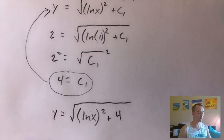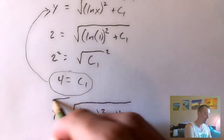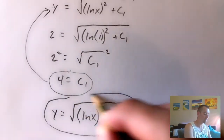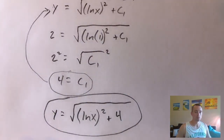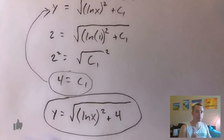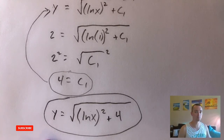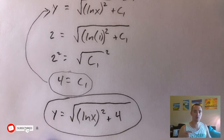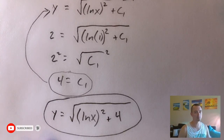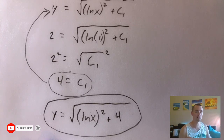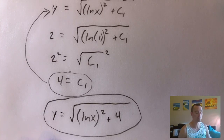Taking C₁ = 4 back into our solution, we get y equals the square root of natural log of x all squared plus 4. This is the solution to the initial value problem we were originally given. If you found this video helpful, please hit that like button below, subscribe to my channel, and hit that bell icon so you don't miss future videos. Thanks and see you next time!